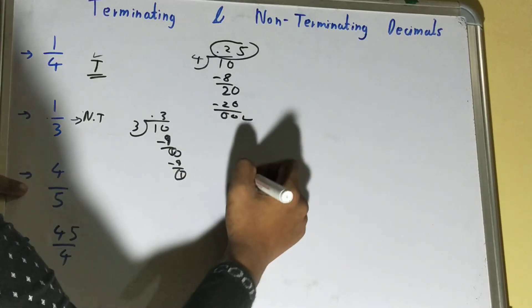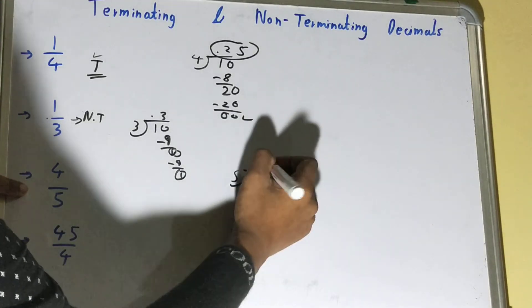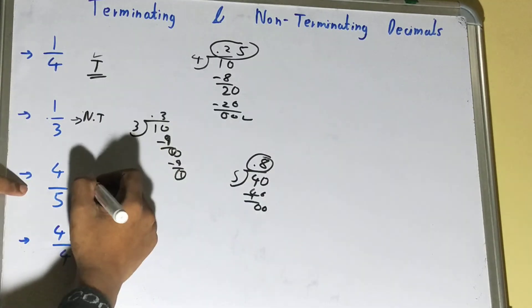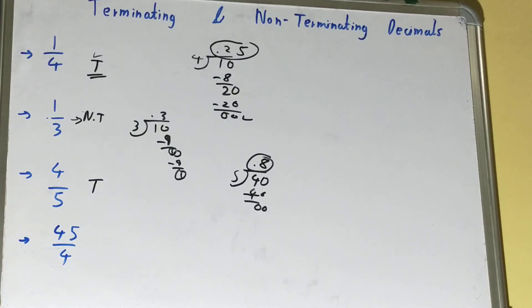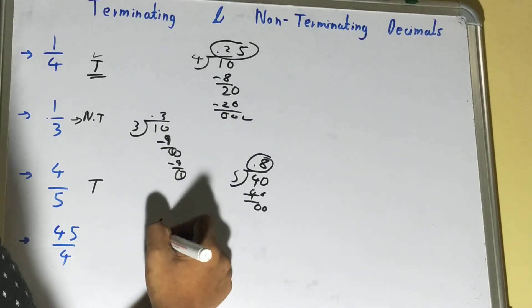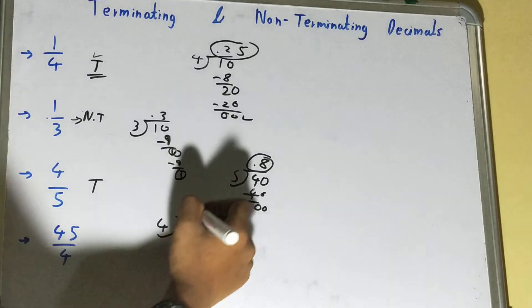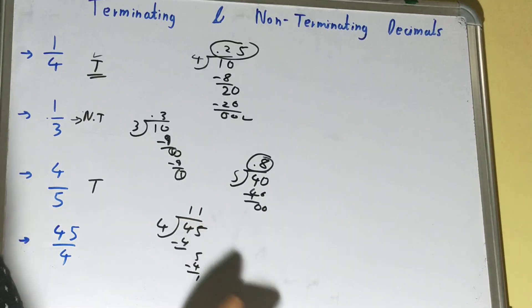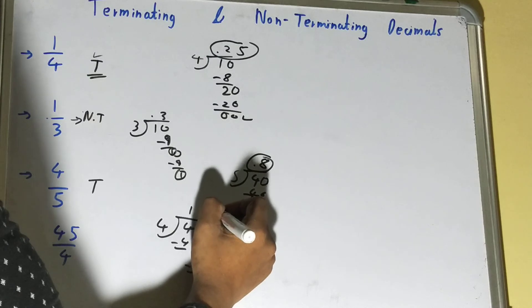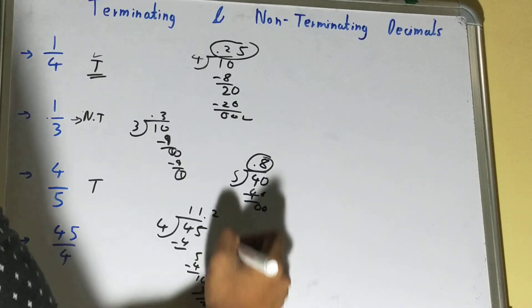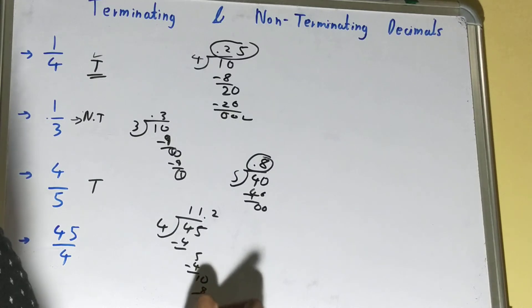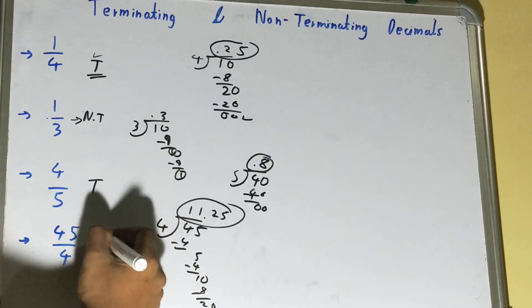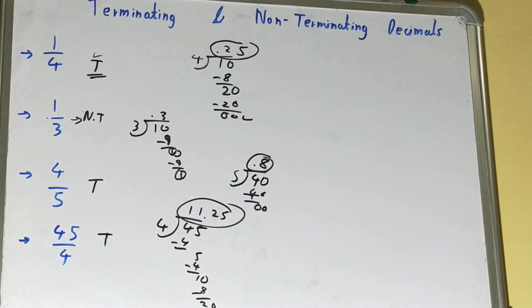Next: 4 divided by 5. Putting the decimal — 5 times 8 is 40 — we get a fixed value right away, so this is terminating. The next one is a bit more complex: 45 divided by 4. So 4 ones are 4; 4 ones are 4; then 4 times 2 is 8, then 20, then 4 times 5 is 20 — giving us 11.25. We are getting a fixed value and remainder 0, so this is also a terminating decimal.